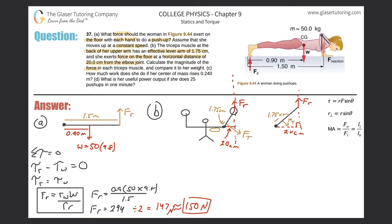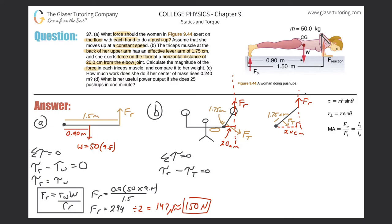There are two torques because there are two forces acting at a distance from the axis of rotation. The sum of the torques equals zero because she's moving at constant speed with no rotational acceleration. The reaction force rotates the forearm counterclockwise — positive torque. The tricep force rotates the forearm clockwise — negative torque. So: torque of reaction minus torque of tricep equals zero, meaning the torque of the tricep equals the torque of the reaction force.